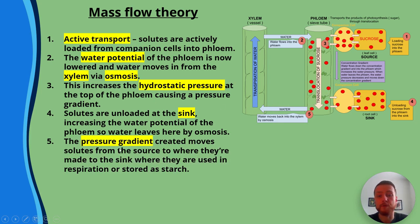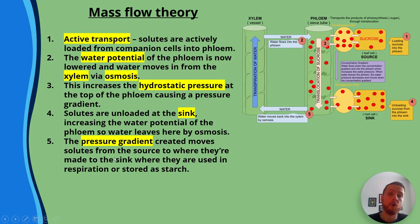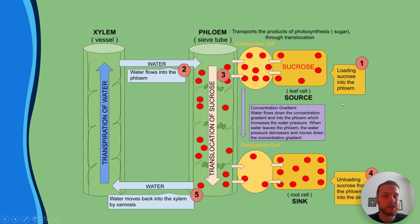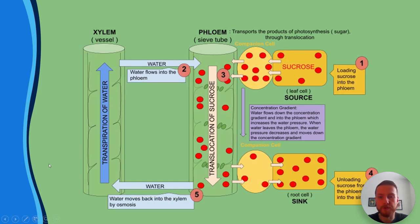The pressure gradient moves solutes from the source where they're made to the sink where they're used — either in respiration to produce ATP, or stored as starch by forming glycosidic bonds between monosaccharides to build up polysaccharides. This larger diagram shows water entering the phloem at the top and leaving at the bottom.